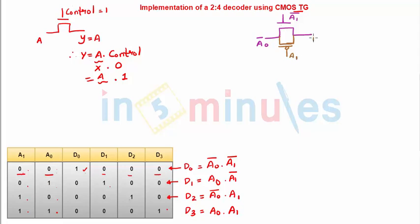Let's go ahead and do it for d1. We'll use the same philosophy. So it says that d1 is equal to a0 ANDed with a1 bar. So this is a1 bar at its input and this is a0.